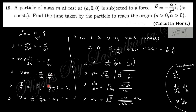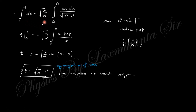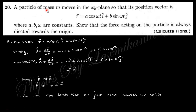Integrating both sides gives v²/2 and the right-hand side gives minus 1/(2x²). Applying the initial condition — at t=0, velocity=0 and x=a — we find the constant of integration C1. From that we get the expression for velocity. Since v = dx/dt, we write dt in terms of dx, then integrate from x=a (at t=0) to x=0, giving us the expression for time t.